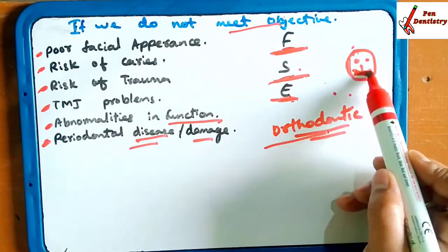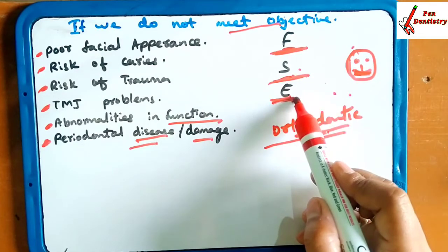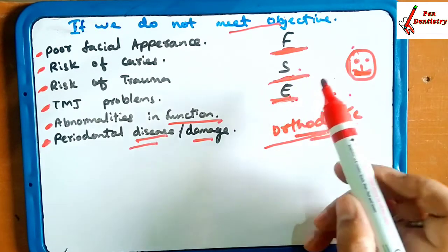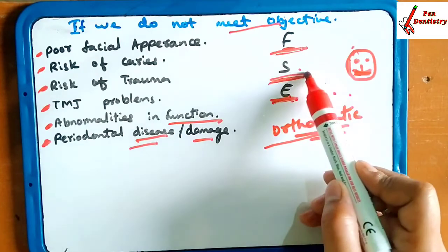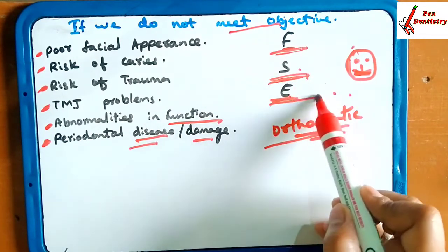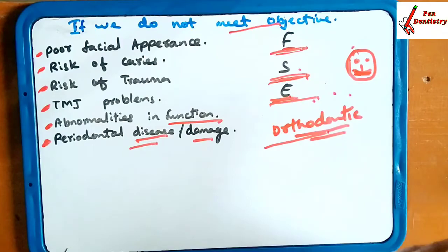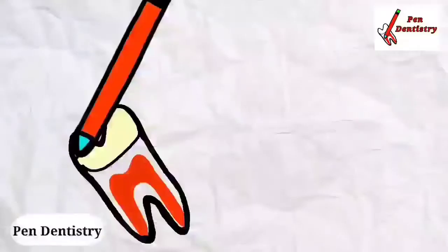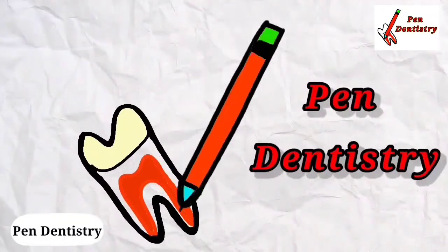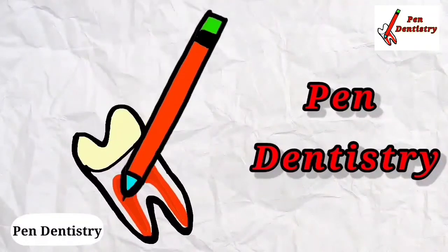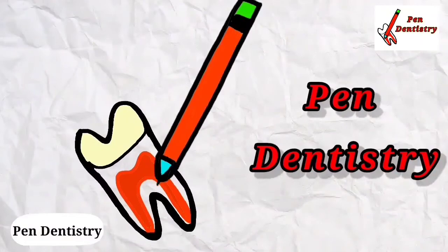So Jackson Triad has given three things: functional efficiency — function should be there; structural balance — balance should be there; and aesthetic harmony — aesthetic should be maintained. Thank you for watching Pendant History. Links are in the description box. Don't forget to like, subscribe, and hit the bell icon for the latest videos.